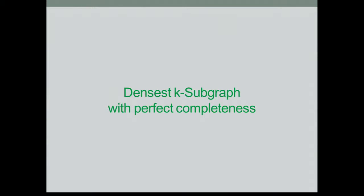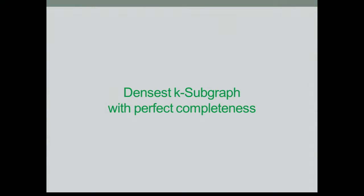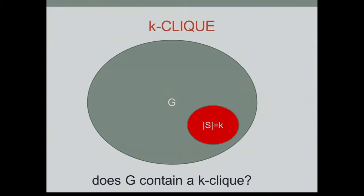So what do I mean by dense k-subgraph with perfect completeness? You all know the k-clique problem: I give you a graph and ask, does it contain a clique of size k?